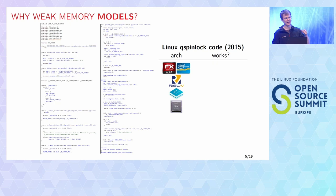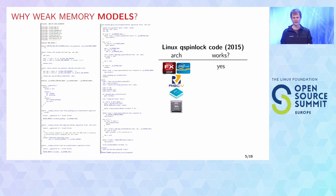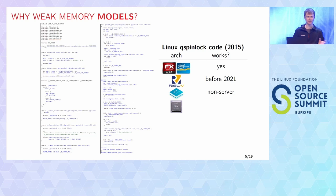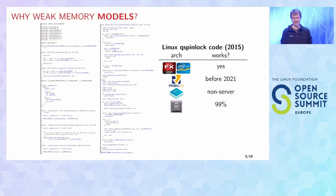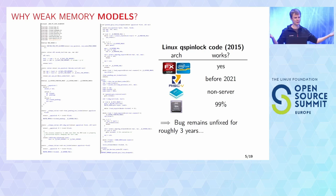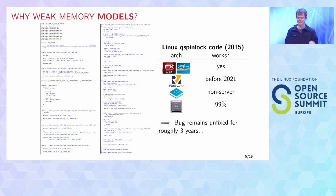The code — the QSpinlock code from 2015 — was written by complete experts, very smart people. If you run it on x86 processors, it will always work. On RISC-V processors from 2015, it will always work. On ARM, as long as you're not using big server machines, it will always work. But on PowerPC, it will most of the time work — and sometimes it just hangs. We have to identify where the hang is, and because most programmers don't have access to such a PowerPC machine to see this behavior themselves, the bug was not fixed for three years. This hang was in the Linux kernel for three years inside the lock itself.